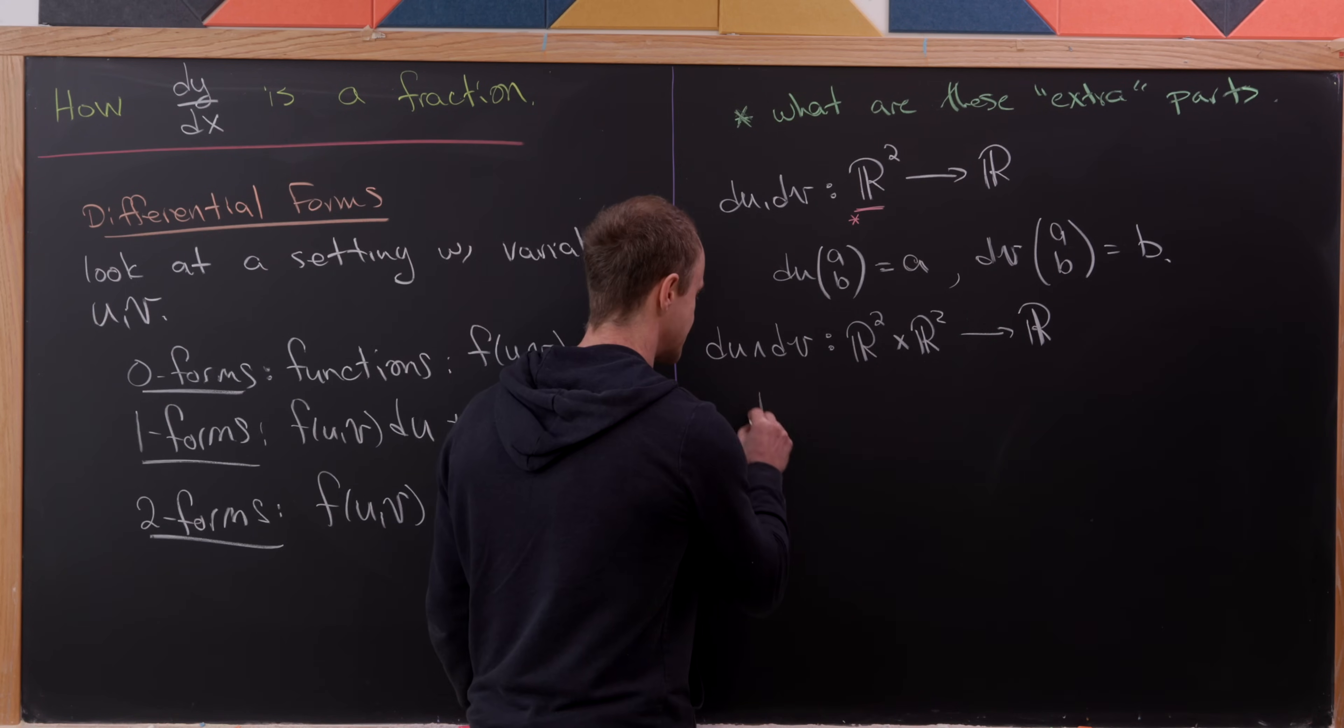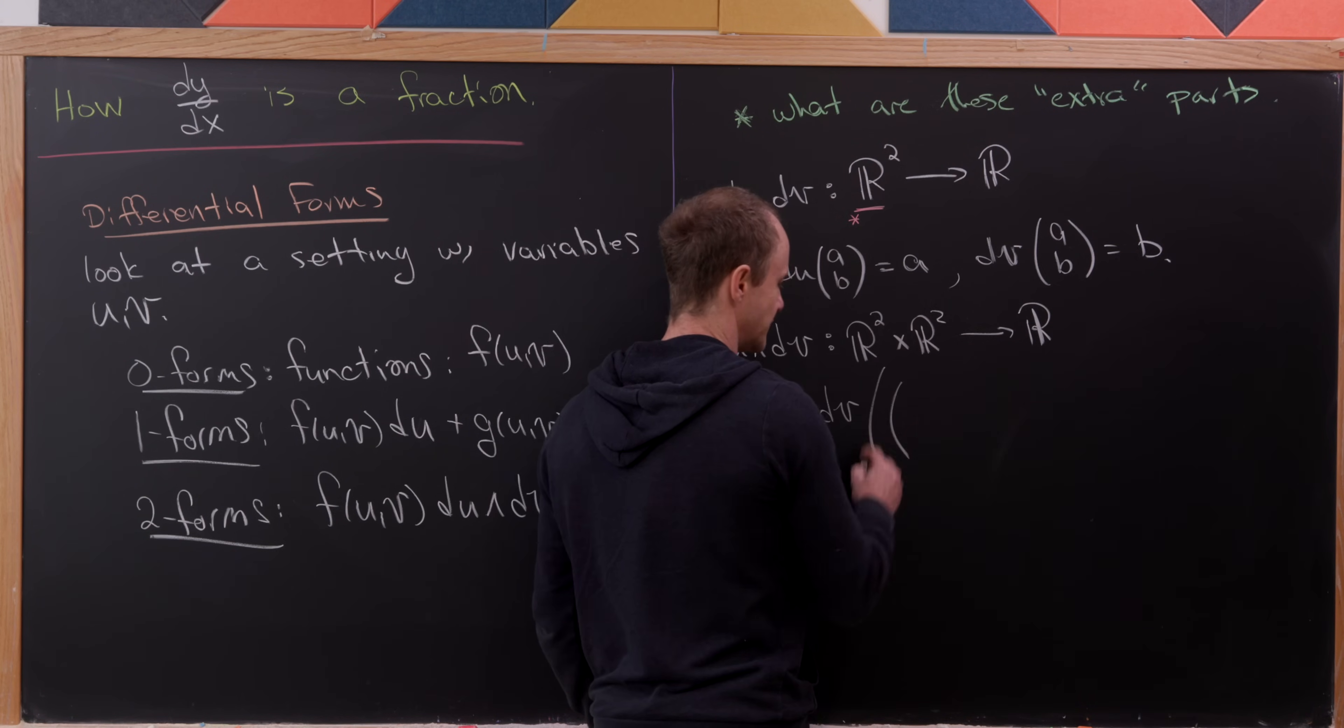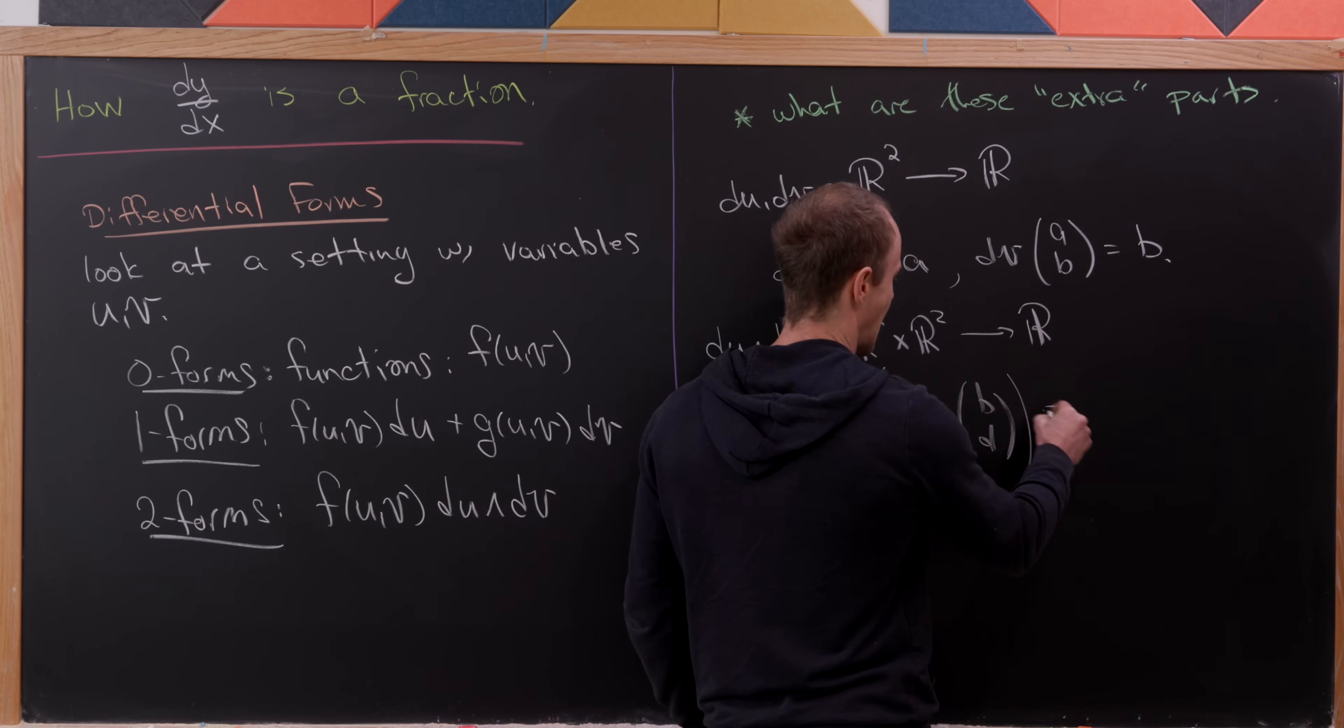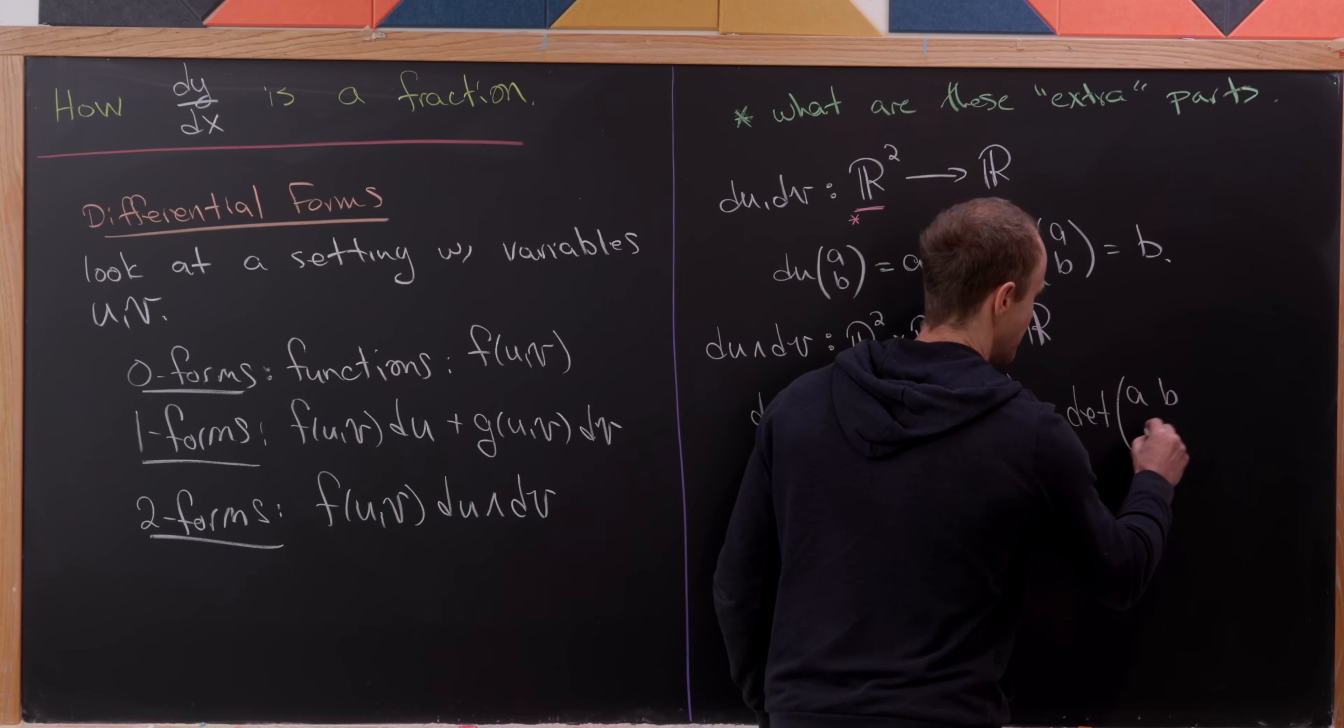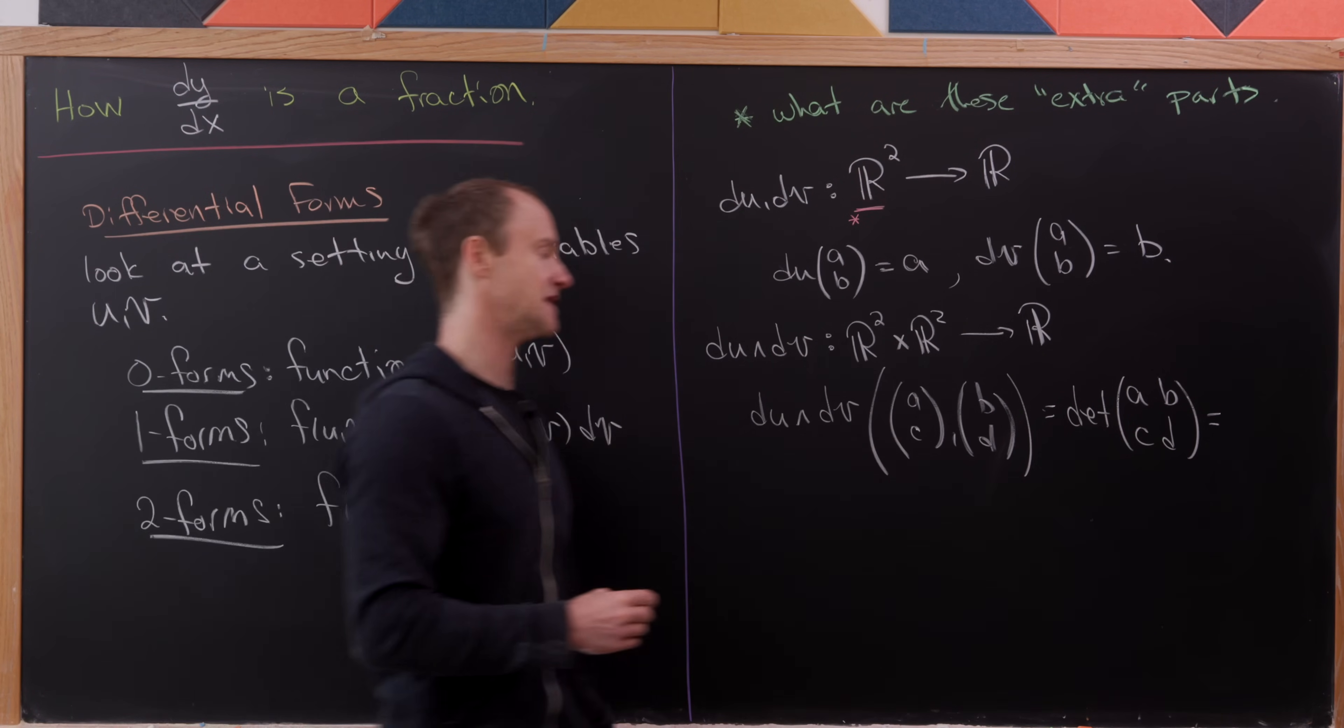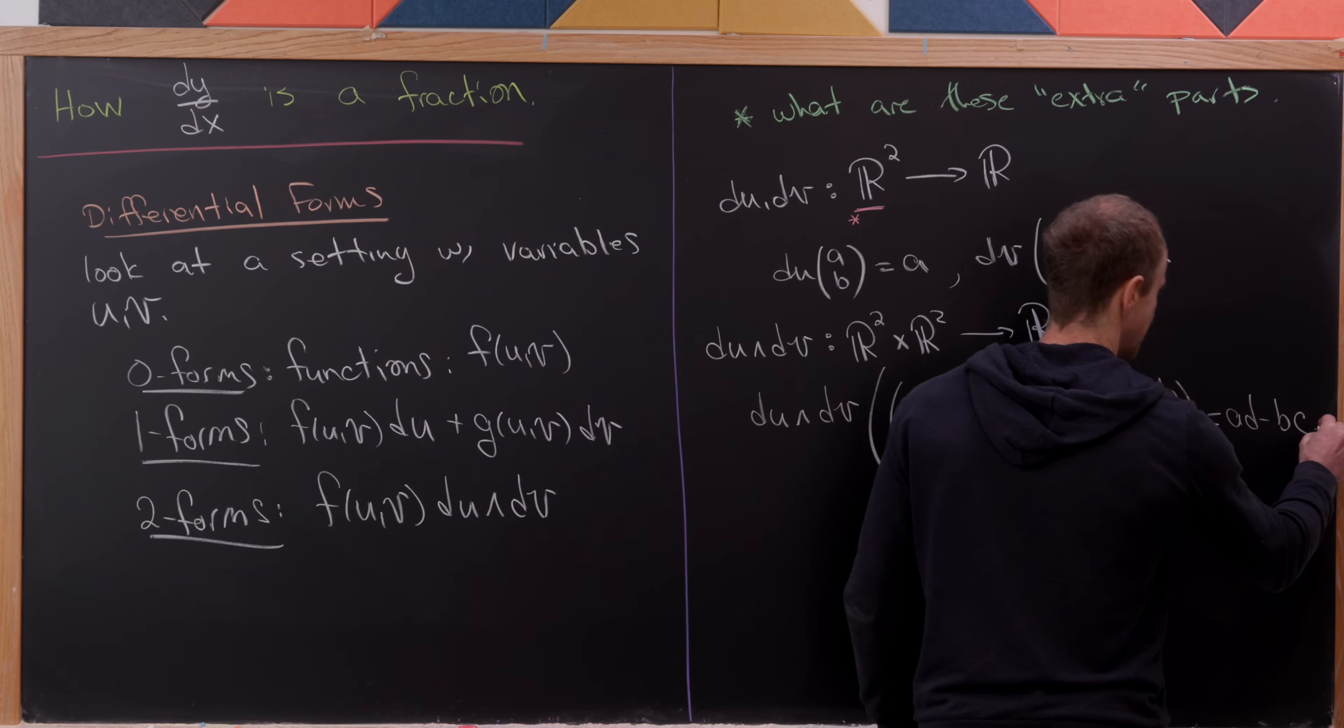And how does it work? Well, du wedge dv needs to take in two vectors. I'll call them a, c, and b, d. And what it does is it gives you the determinant of the matrix whose columns are those vectors. So the matrix A, B, C, D. So, of course, this is AD minus BC.